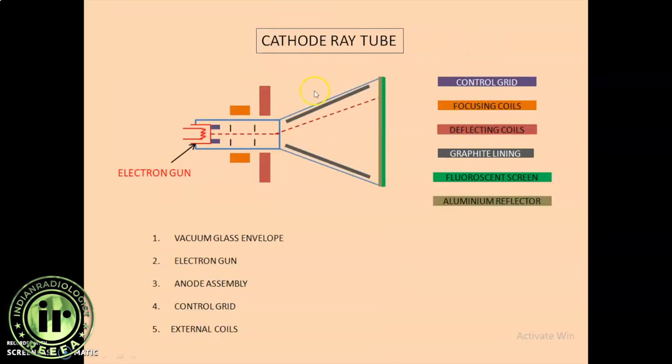What is the structure of the cathode ray tube? You can classify this into five components. The major component is the vacuum glass envelope. It is almost similar to the x-ray tube design. We have a glass envelope with vacuum inside and there is an electron gun which constitutes the cathode part and there is an anode assembly.